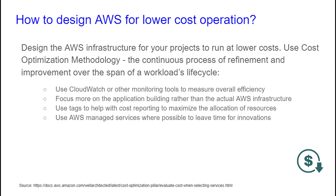This is the process of refining and improving your workloads over its actual life cycle. First of all, you can utilize monitoring tools such as CloudWatch, which allows you to track your instances and measure their overall efficiency. Next, you can focus more on the application building rather than the actual AWS infrastructure. You can also utilize tags to help with the cost reporting to maximize the allocation of resources. And finally, you can use AWS managed services where possible to leave time for innovations.